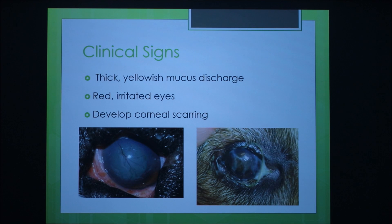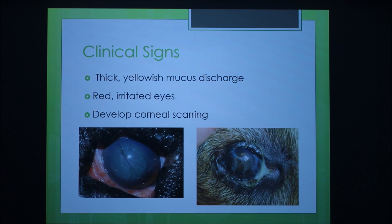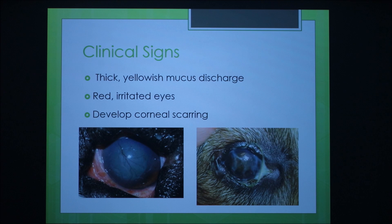There are clinical signs if you think your dog has it, such as thick yellow mucus discharge. My dog had this so bad that the mucus would glue his eyes shut and he wouldn't be able to open them — we would take a washcloth and wash it away to help him feel better. Their eyes may also be red and irritated, and eventually it could develop corneal scarring. In this picture, that's neovascularization — that's when you can see the red veins coursing through their eyes. I thought my dog just got red thread in his eyes at first until the vet told us what it was.